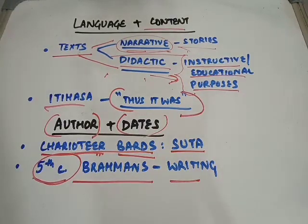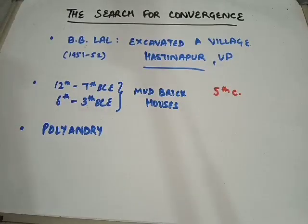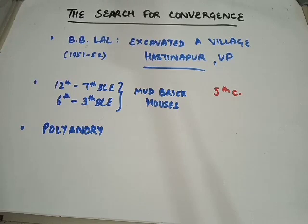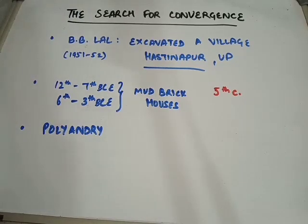Now let's move on to the next sub-topic, which is the search for convergence. Here we will see whether there is any corroborative evidence for what is written in the texts — whether any proof has been found about the practices or situations that existed at that time according to these texts. We will specifically talk about the Mahabharat, which mentions battles, palaces, human settlements, etc.